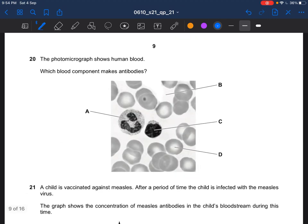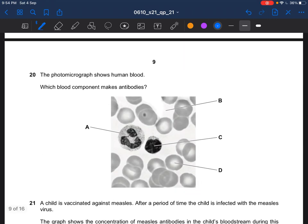Next question. The photomicrograph shows human blood. Which blood component makes antibodies? You know that this is white blood cell. And it's lymphocyte that produces antibodies. So we are looking for lymphocytes. Can't be B, can't be D. The answer would be C. This is the lymphocyte. A is your phagocyte. As you can see, it is lobed. Although this one is kind of like circular.